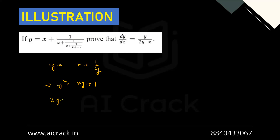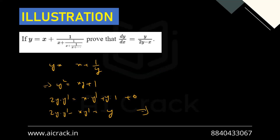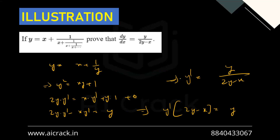Differentiating y² = xy + 1 on both sides: 2y·y' = x·y' + y·1 + 0, using the product rule on the right. Separating y' terms: 2y·y' − x·y' = y. Taking y' as common: y'(2y − x) = y. Therefore y' = y/(2y − x), which is what we needed to prove. There's nothing new here — just differentiate both sides and isolate y'.